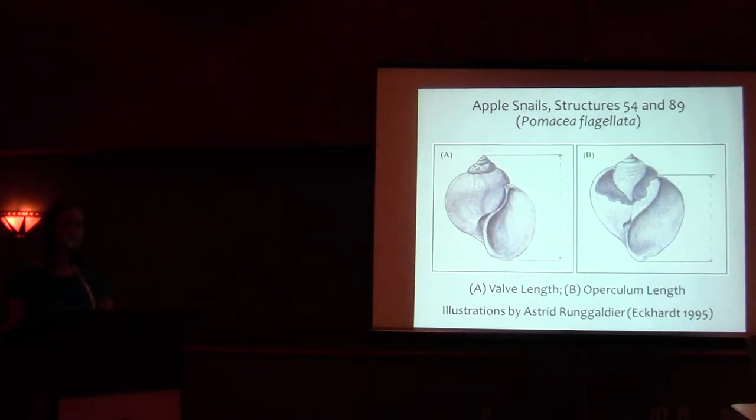In 1995, Cheryl Eckert recorded the valve and opercula blanks from the apple snail shells from Structures 54 and 89. She was inspired by an experimental study in which Norman Hammond's field crew collected apple snails and fried them up in butter, and from which it was concluded that large snails are tough and flavorless, while medium-sized snails are tender and preferable. Based on these results, Eckert sought to determine whether people selectively harvested medium-sized snails.